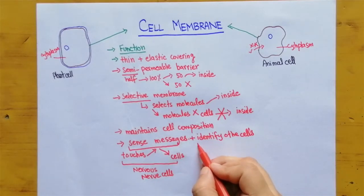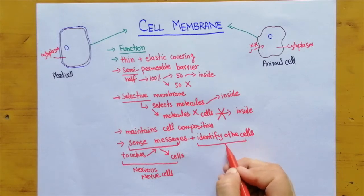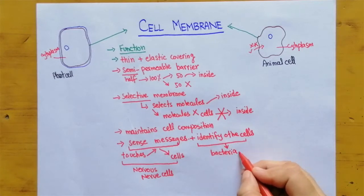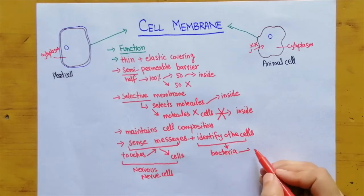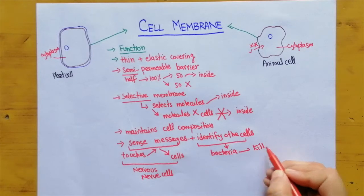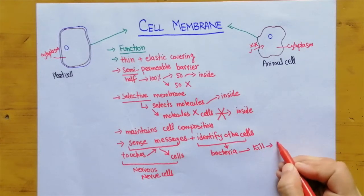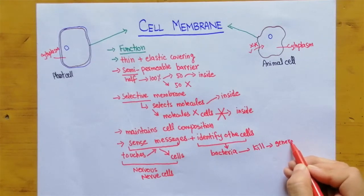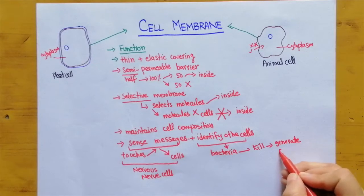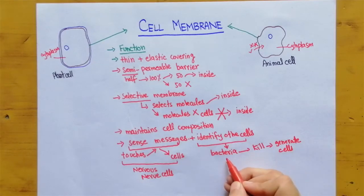And what about identify cells? For example if some kind of bacteria enters inside the cell, the cell membrane will identify the bacteria and it may kill or it may generate some cells that can kill the bacteria. So this is the function of cell membrane.